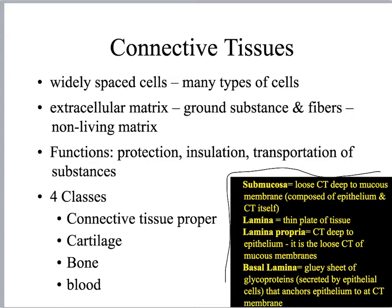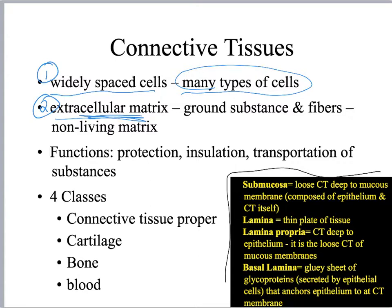Connective tissues differ from epithelial tissues, which are closely spaced with a free edge and an attached edge. In connective tissues, the cells are typically widely spaced — they're not necessarily touching each other — and you're going to have lots of different cell types. With epithelium you see simple cuboidal cells lined up next to each other, but with connective tissues you'll see white blood cells, fibroblasts, chondrocytes, osteocytes, and others depending on the type. So that's number one: widely spaced cells.